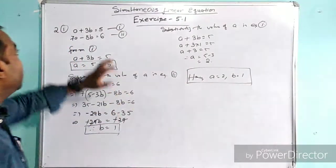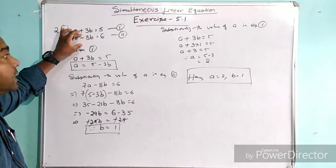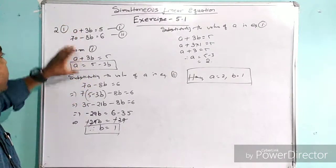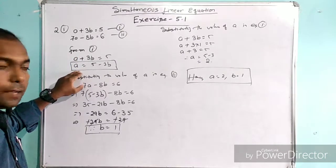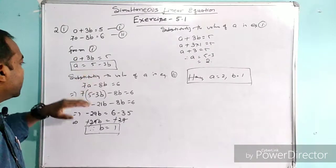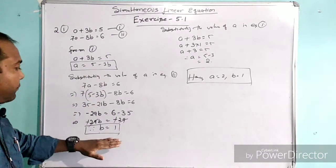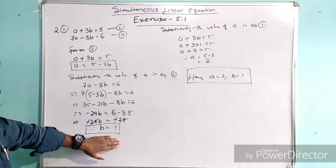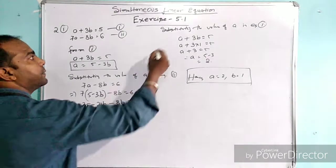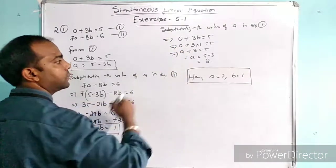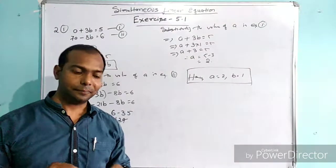To recap: we took equation 1 and equation 2. We found a temporary value of a from equation 1, substituted it into equation 2, and found the actual value of b. Then taking that value of b back into equation 1, we found the value of a. This is our solved equation — hence we have the values a equals 2 and b equals 1.